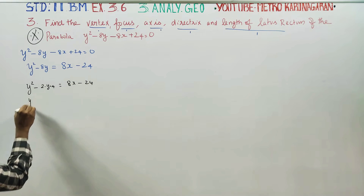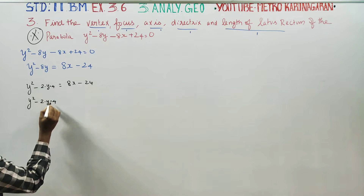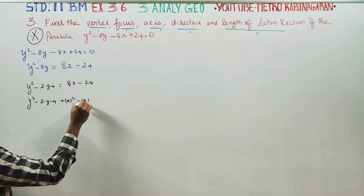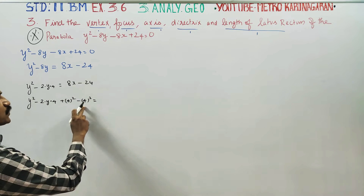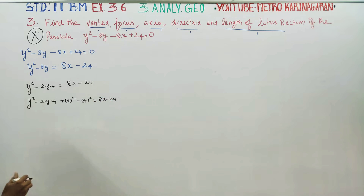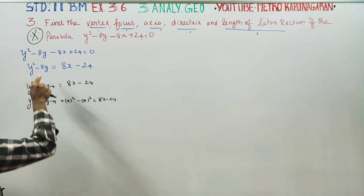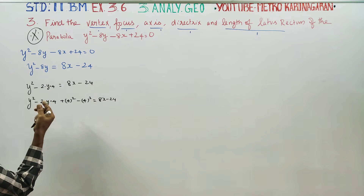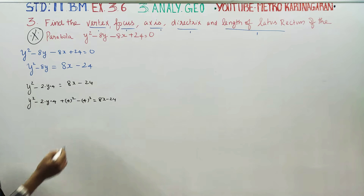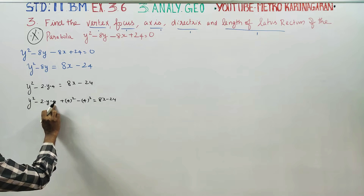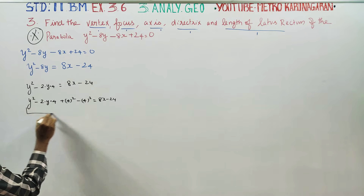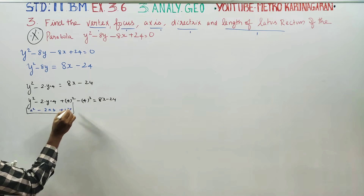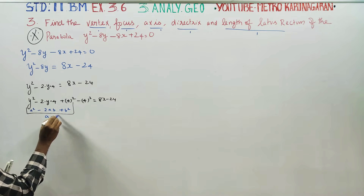Next stage: Y squared minus 2 times y times 4. Add and subtract 4 squared. Square and subtract. The algebra formula is: a squared minus 2ab plus b squared equals (a minus b) whole square.